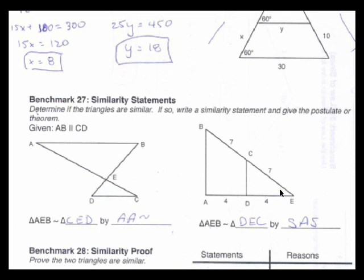And angle E is a reflexive angle shared by both the small triangle DCE and the large triangle ABE. And so we have side angle side as the reason.